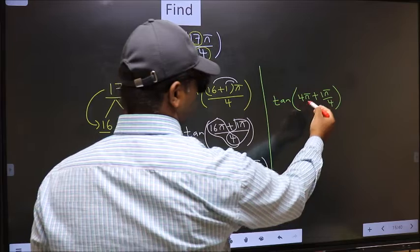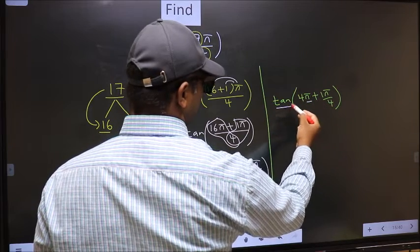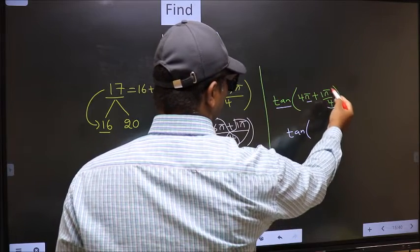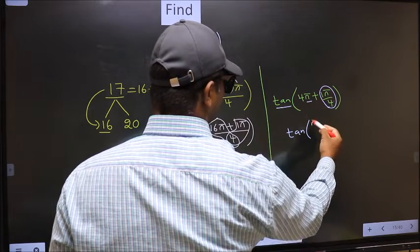Next. Here we have pi. So, tan is not going to change. It will remain tan. And inside, we get this angle, pi by 4.